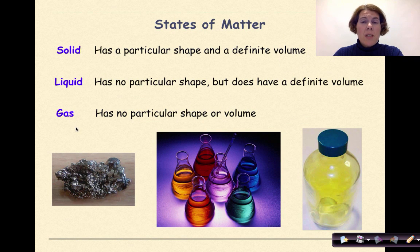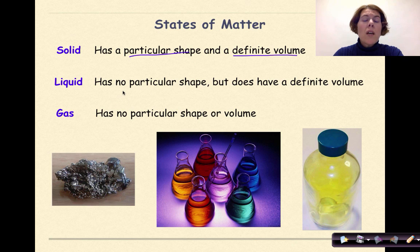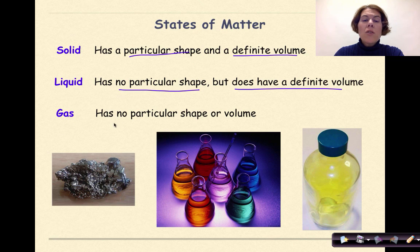There are three different types of states of matter that we look at in this course. A solid has a particular shape and a definite volume. A liquid has no particular shape, but does have a definite volume. And finally, a gas has no particular shape or volume. And we can see our three examples below.